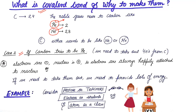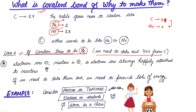Let us consider the first case. If carbon tries to become a helium atom — carbon is 2,4 and helium is only 2 — so if carbon has to become a helium atom, what should carbon do? Carbon should be losing 4 electrons. So we need to take out 4 electrons from carbon to make it look like helium.